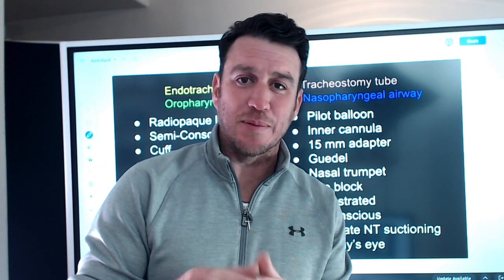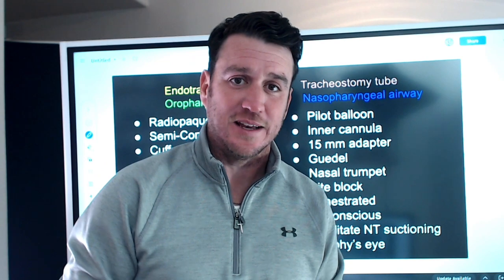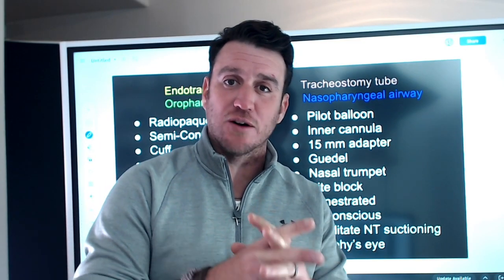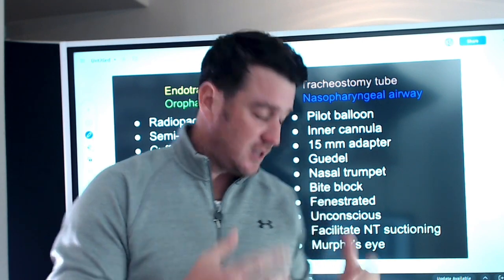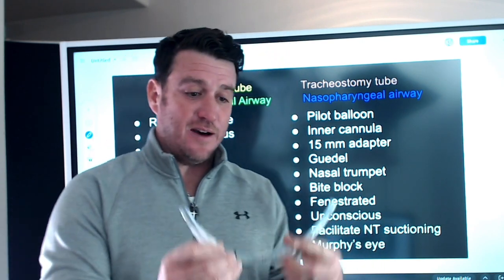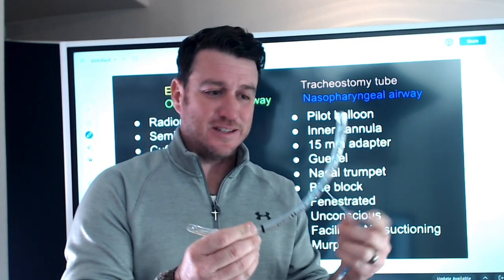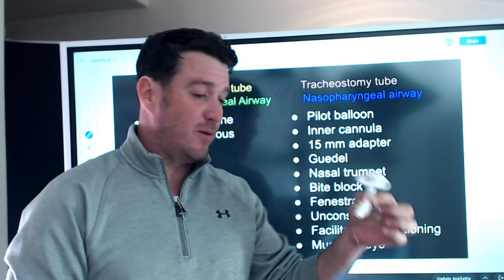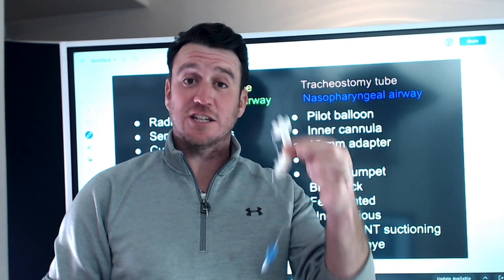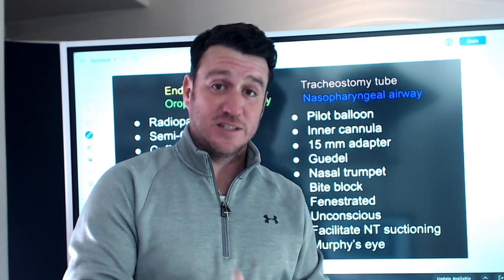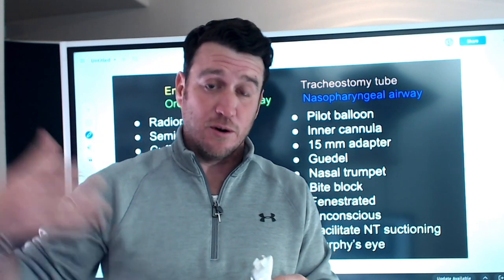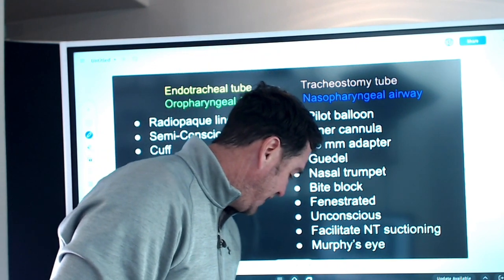What's up future respiratory therapists! Today we're talking all about artificial airways. We have multiple different types — an endotracheal tube, used to facilitate mechanical ventilation, and tracheostomy tubes, which are also used to facilitate mechanical ventilation and to help people maintain airways who cannot maintain their own upper airway.